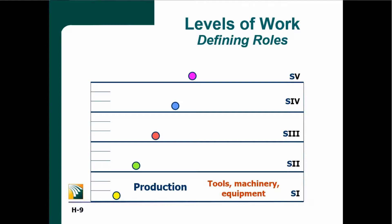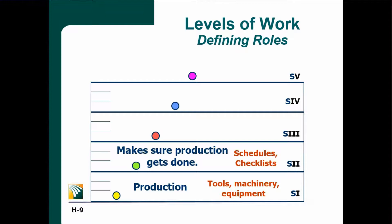Stratum two. If you have a stratum two role, at the top of the role description, Jaques would have you write: this is a stratum two position. This role in the organization is to make sure production gets done using schedules, checklists, and meetings.